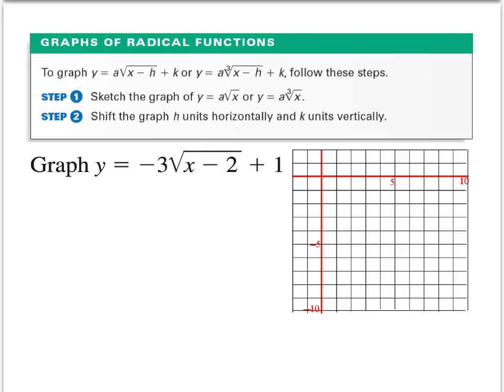Functions won't always be as simple as y equals the square root of x. When more is going on, there are a few more steps. The first step is the same — we graph y equals a times the square root of x, then incorporate numbers that shift the graph horizontally or vertically. In this case, we'll graph y equals negative 3 times the square root of x.